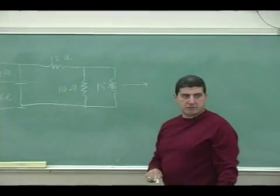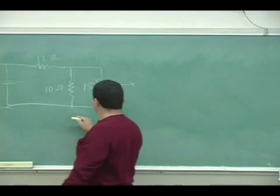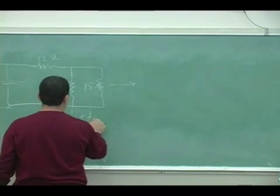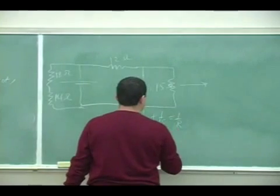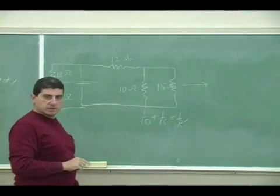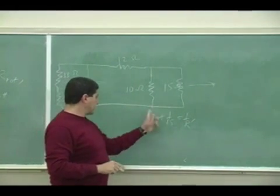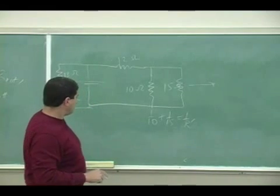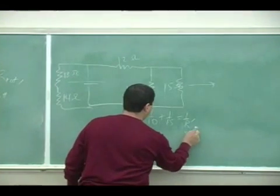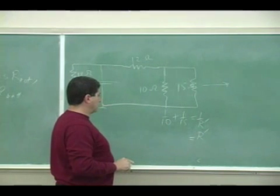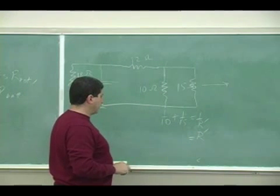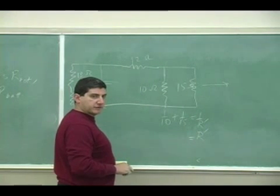So 1 over 10 plus 1 over 15 equals 1 over r, call it r prime, right? So what's that going to be? That's 25 over 150, 150 over 25, that's 6, right?